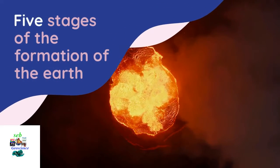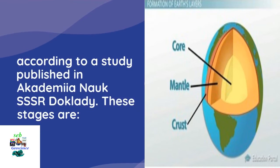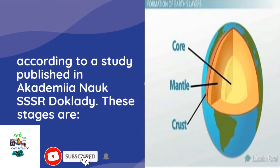Five Stages of the Formation of the Earth. The formation of Earth is believed to have occurred in five stages, according to a study published in Academia NOC SSSR Doclady. These stages are: